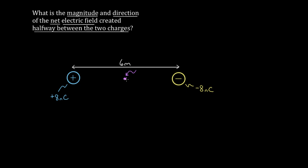Each charge is going to create an electric field at this point, and if you add those electric fields up like vectors, what total electric field would you get? At first you might think you should just get zero, right? It's very tempting to say the electric field is just going to be zero there because you've got a positive eight nanocoulomb charge and a negative eight nanocoulomb charge, and those should just cancel.